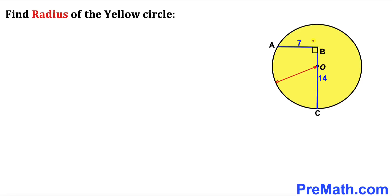In this video we have two line segments AB and BC that are perpendicular to each other inside a circle, where O is the center of this circle. The line segment AB is 7 units and BC is 14 units, and we are going to calculate the radius of this yellow circle.